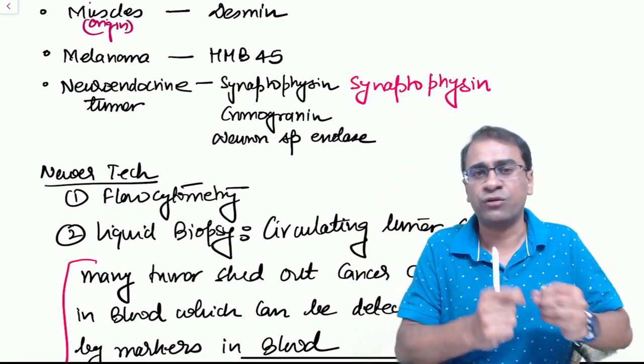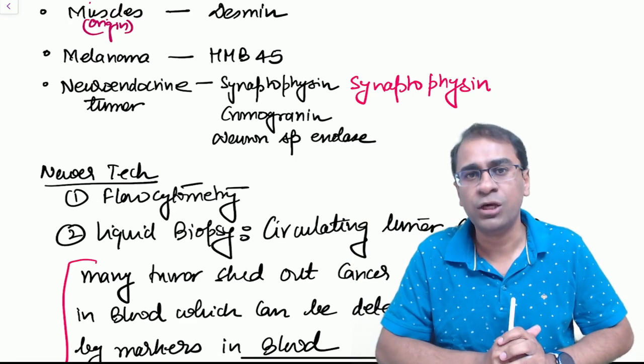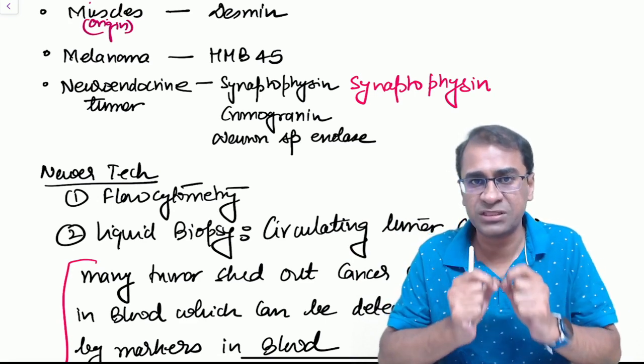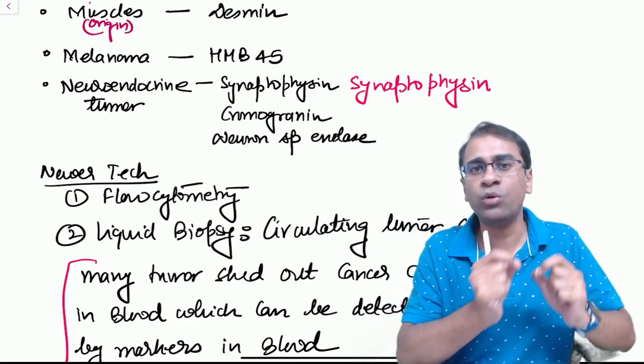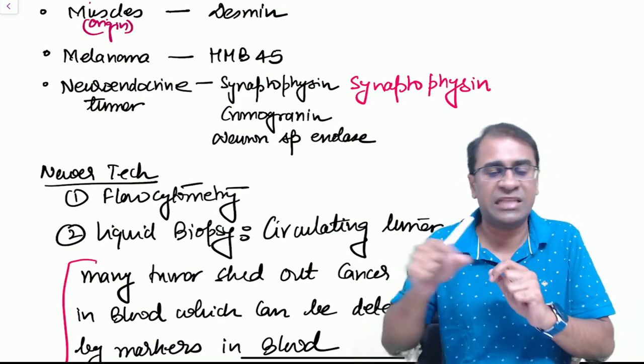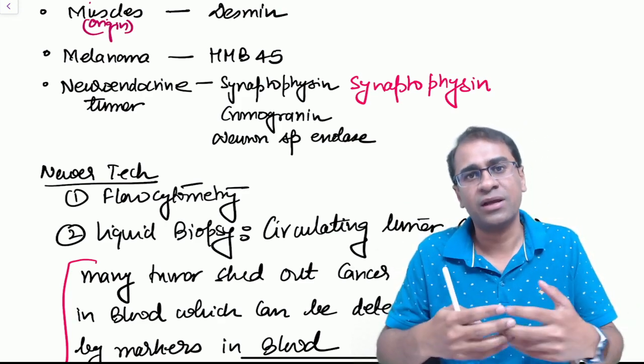Two new methods apart from the tumor marker, which is a separate topic altogether: one is flow cytometry used for diagnosis of leukemias and lymphomas, and you will come to liquid biopsy, which is actually looking for tumor cells in the peripheral blood without the need of doing a biopsy. This is called liquid biopsy, also called circulating tumor cells.